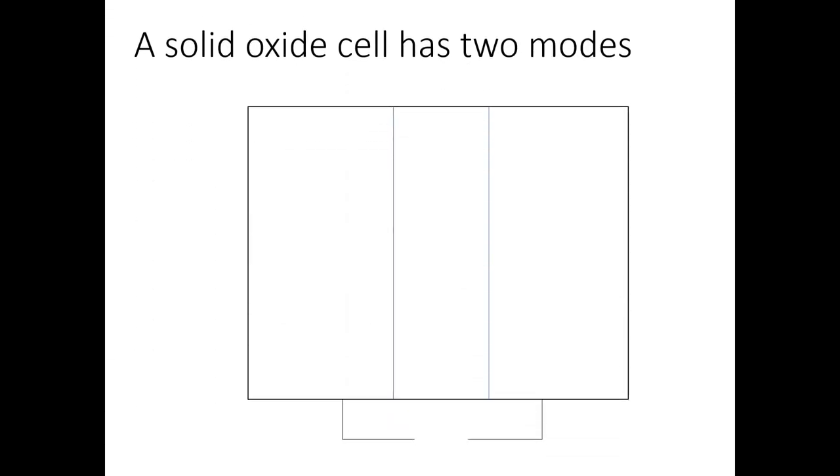The solid oxide cell has two modes, fuel cell mode and electrolysis mode. In this schematic, we have anode and cathode, and a thin solid oxide electrolyte in between, usually made from yttrium-stabilized zirconium oxide, operating at 600 to 1000 degree Celsius.